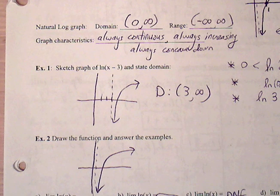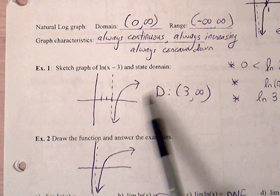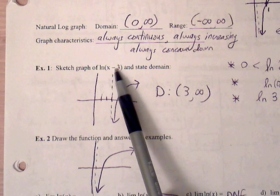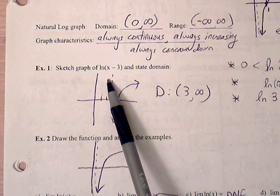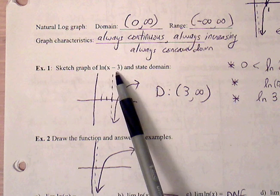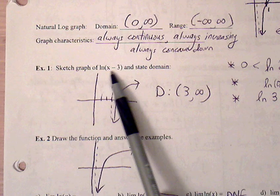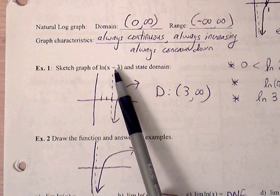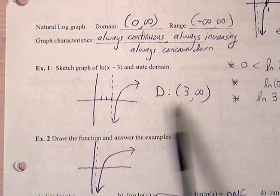Example 1. Sketch the graph of natural log of x minus 3 and state its domain. x minus 3 means that there's a vertical asymptote at 3, whatever makes that 0. And all the x values that will make this positive are going to be values greater than 3. So domain is from 3 to infinity.